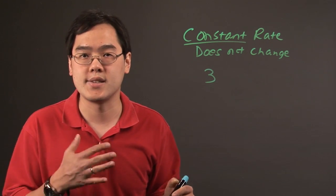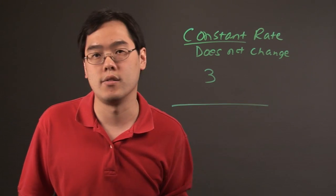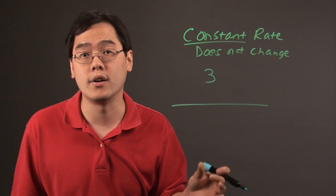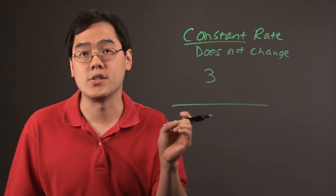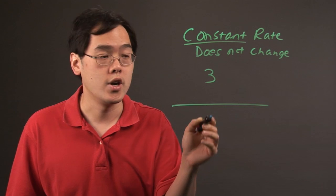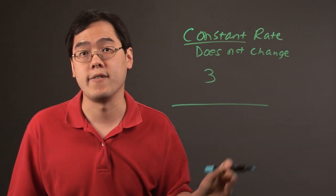And oftentimes, to express constant rate is really that of a horizontal line, because that will tell the reader, whoever is viewing it, that this is a constant rate, that it's not going to increase or decrease, it's just going to stay flat.